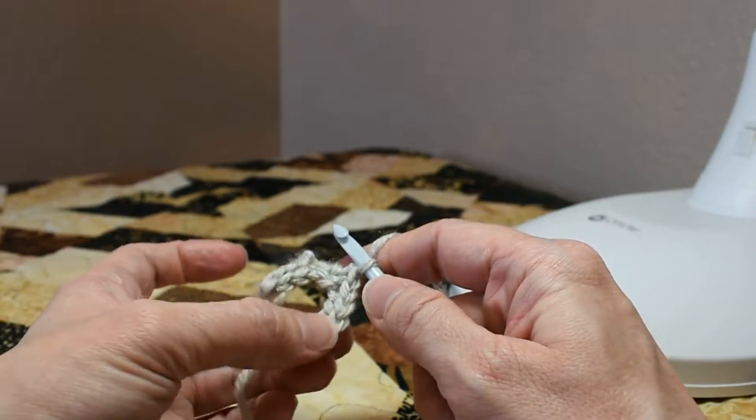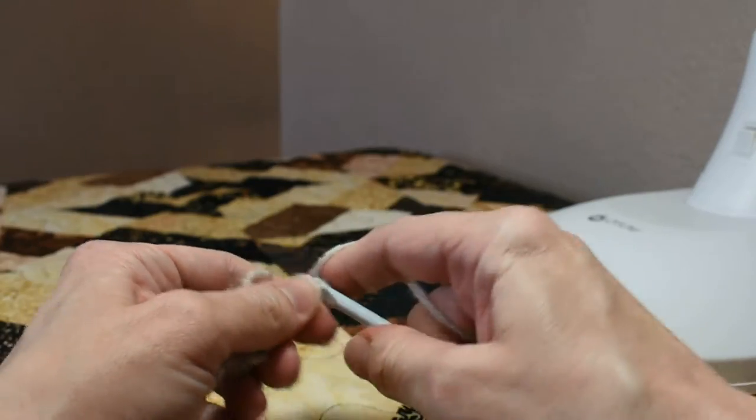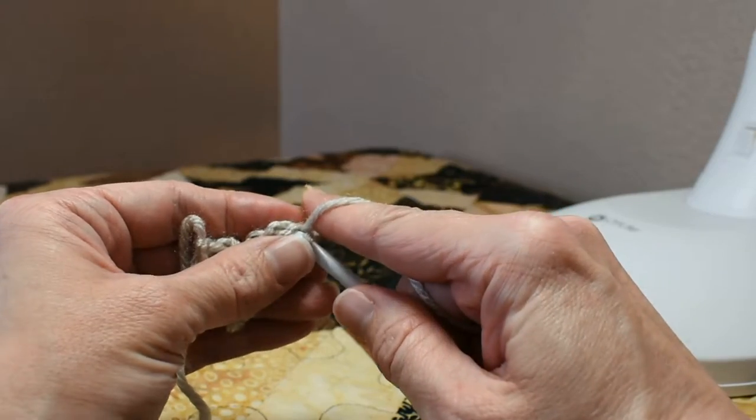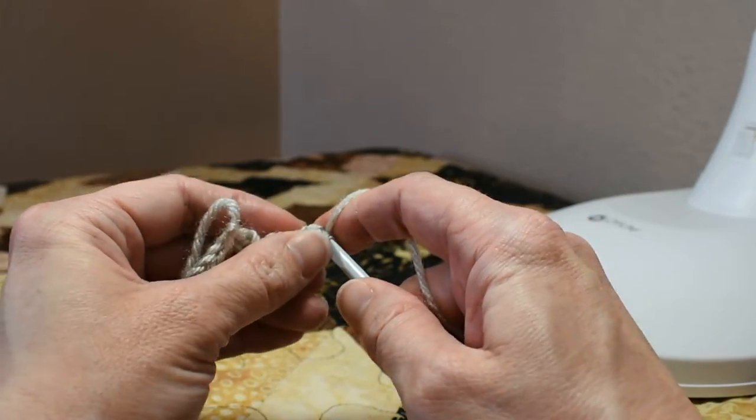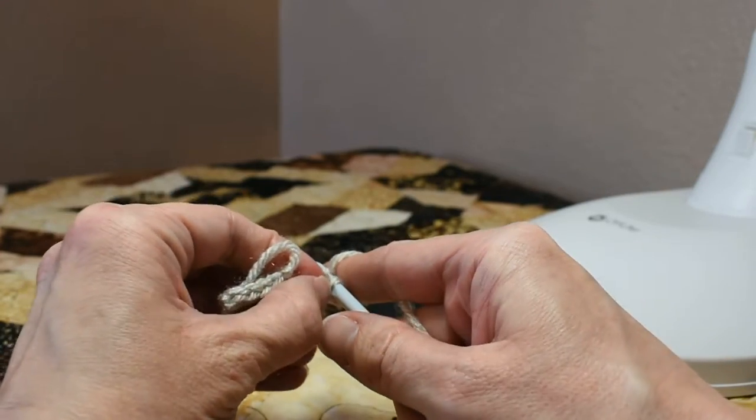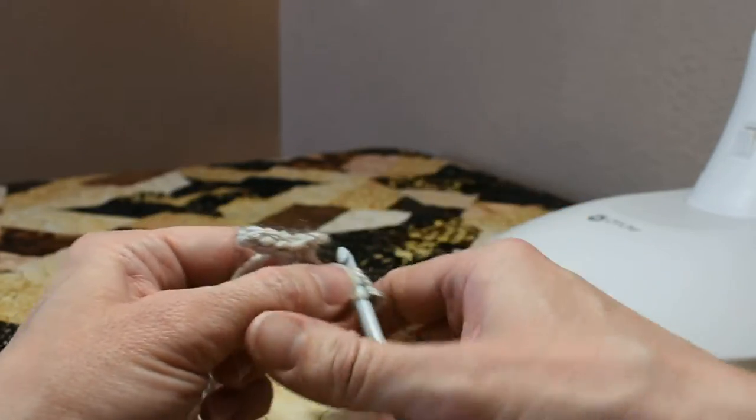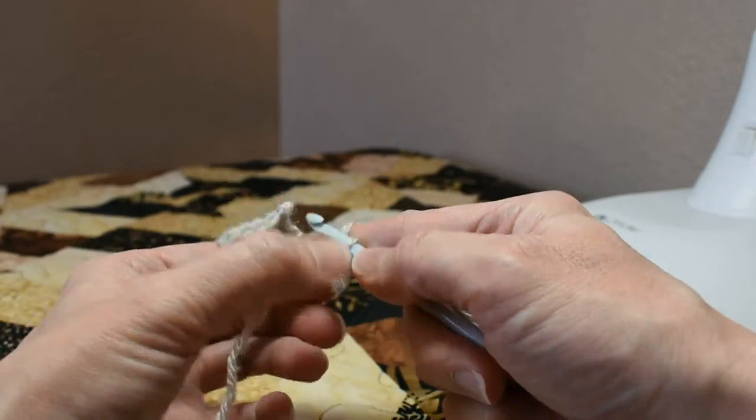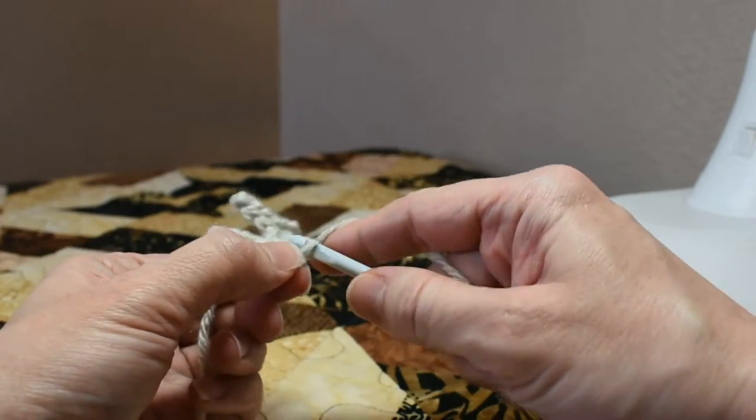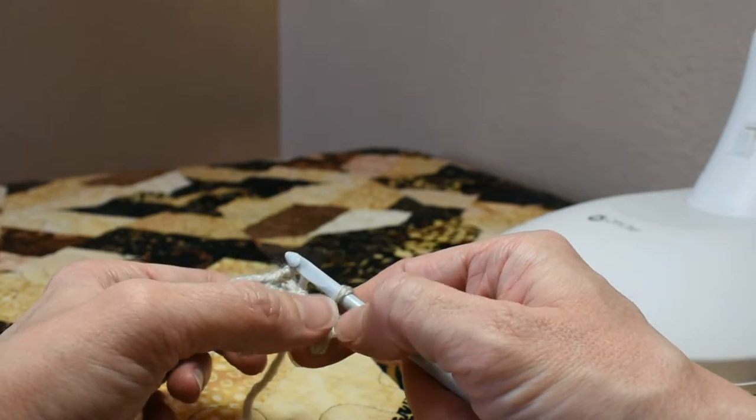So we have one toe, two toes. These are front toes. We're going to chain three and again slip stitch down those three chains that you just made. And this is going to form the back toe. So you've got two front toes and a back toe.